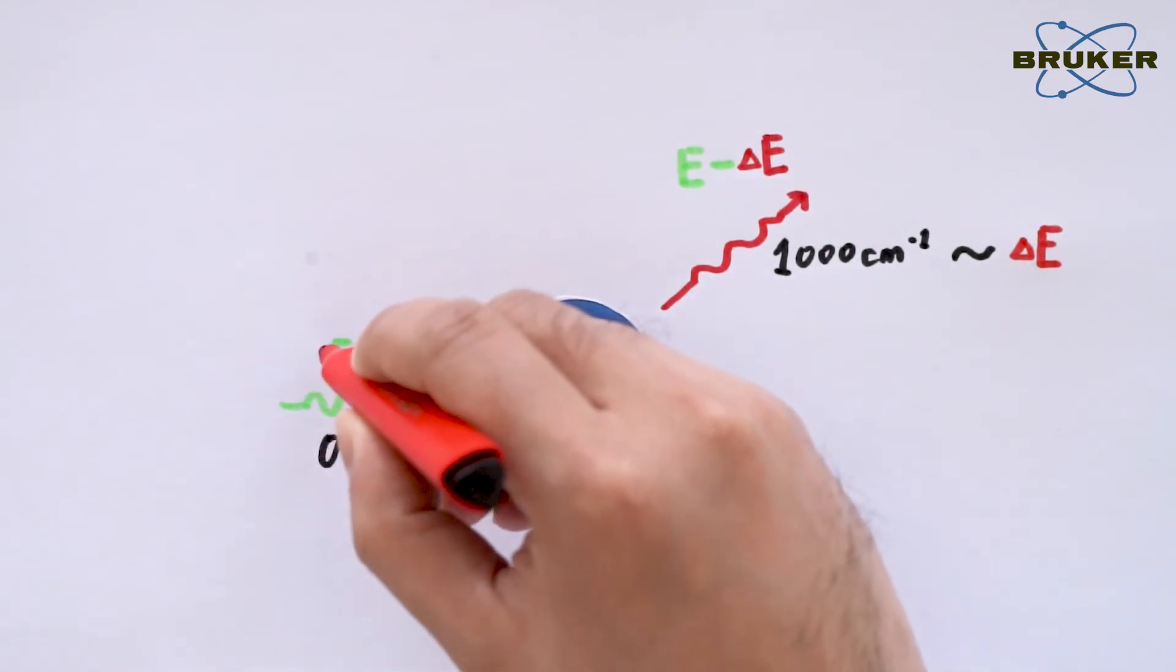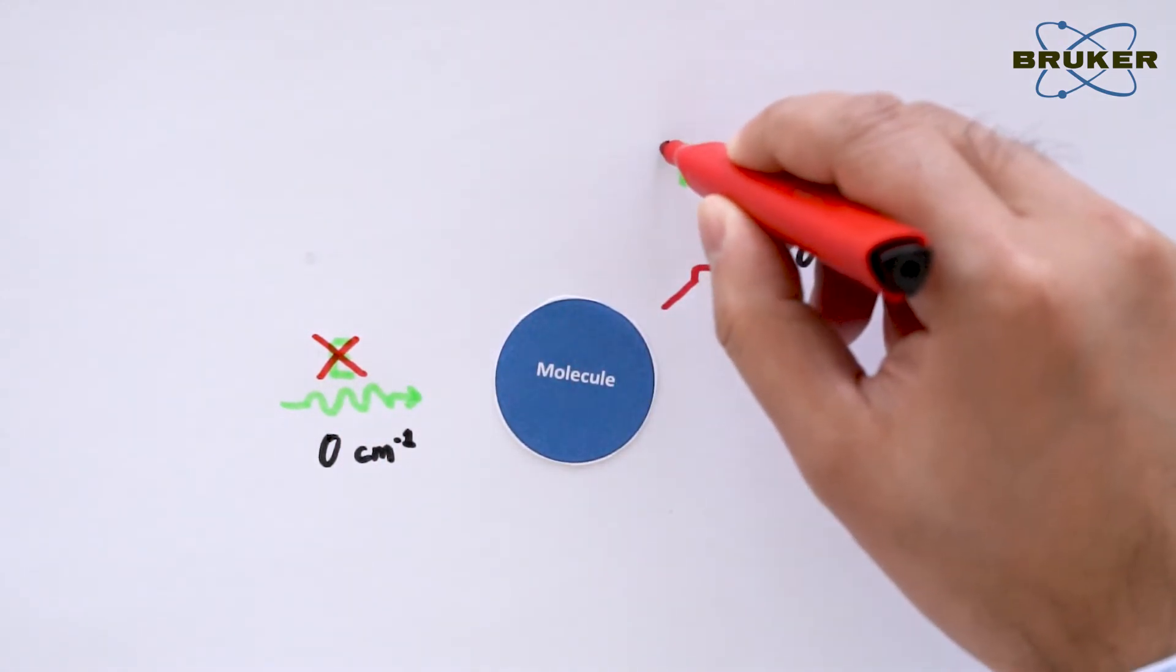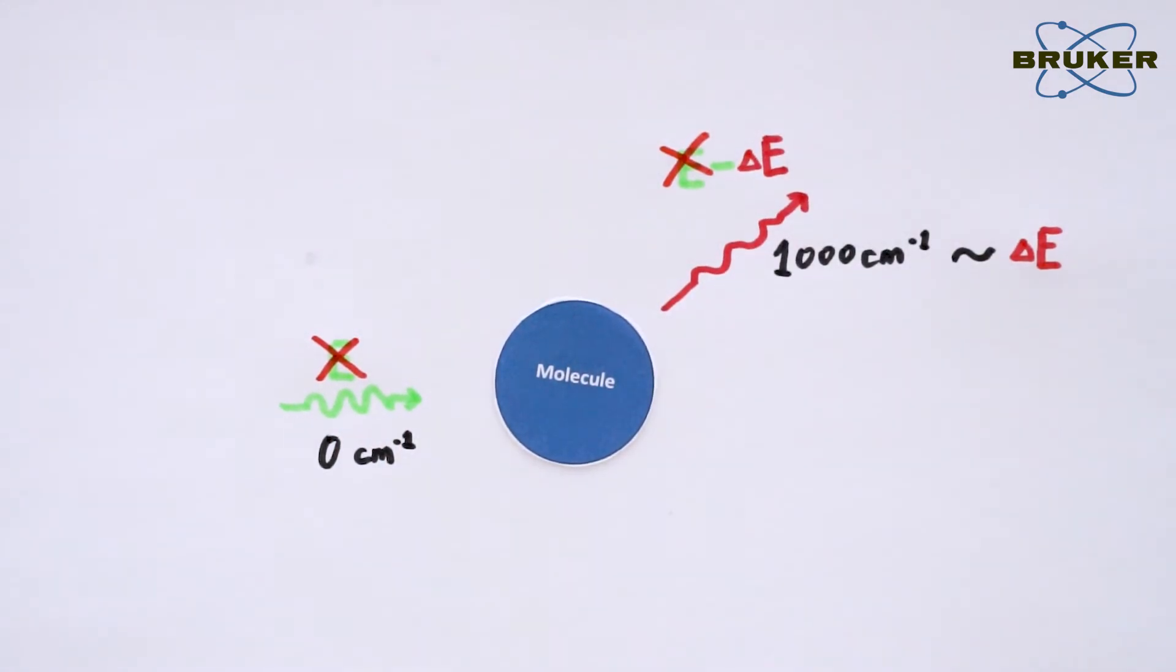This way, the laser wavelength does not play a role in the result anymore. This also means that you can use any laser wavelength for the Raman analysis. We will always have the same Raman shift for the same vibrational frequency.